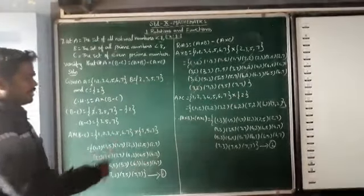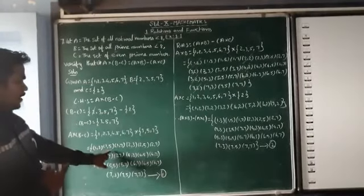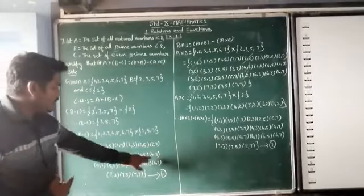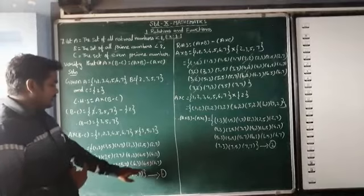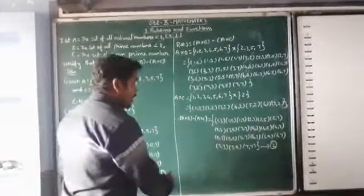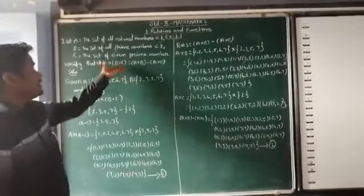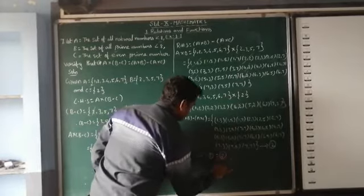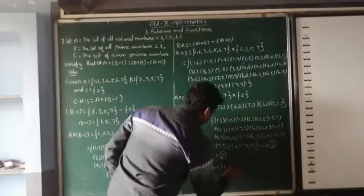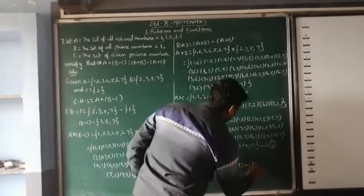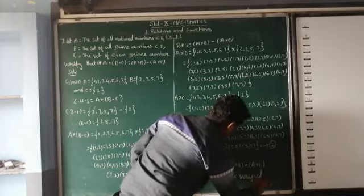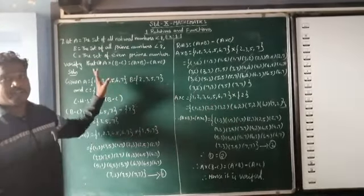I want to compare equation 1 and equation 2 — both all elements are equal. (1,3),(1,5),(1,7), (2,3),(2,5),(2,7), (3,3),(3,5),(3,7), (4,3),(4,5),(4,7), (5,3),(5,5),(5,7), (6,3),(6,5),(6,7), (7,3),(7,5),(7,7). Therefore equation 1 is equal to equation 2. Hence it is verified. Thank you students. Our first exercise 1.1 is over. Thank you.